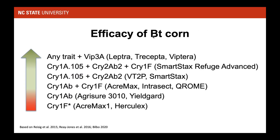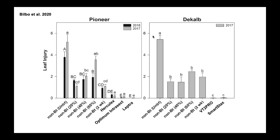A study done in South Carolina rated injury to the whorl or leaf stage corn on a scale of zero to nine — nine being most severe. They compared non-BT corn with insecticide treatments triggered at 20, 40, and 60 percent infested plants, a spray-every-two-weeks schedule, and three types of BT corn — Herculex, Optimum Intrasect, and Leptra — in the Pioneer family, and VT Double Pro and SmartStax in the DeKalb family.